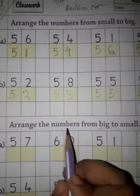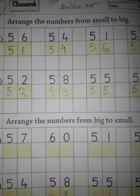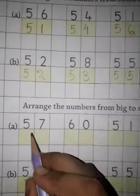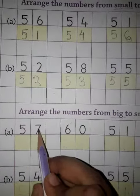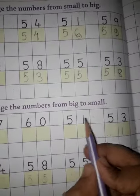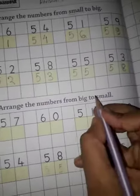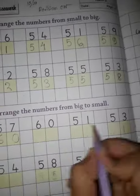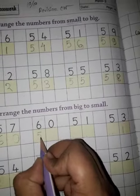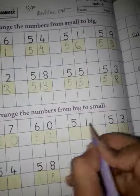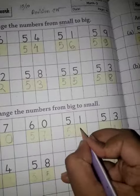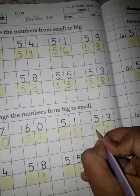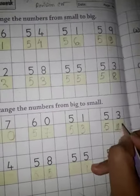Next question is arrange the numbers from big to small. So big means big. 57, 60, 51, 53. So big number is 60, then 57, then 53, last one is 51, okay.